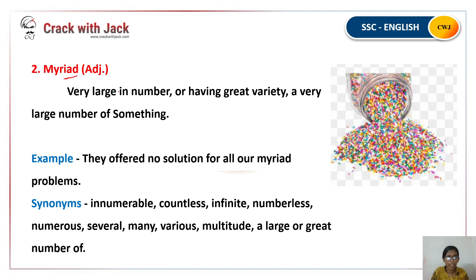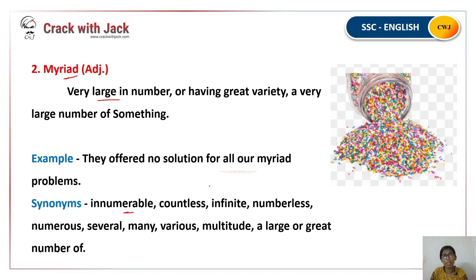The next word is Myriad, meaning a very large number — innumerable. The synonyms are: countless, infinite, numberless, numerous, several, many, various, multitude, a large number of, a great number of.